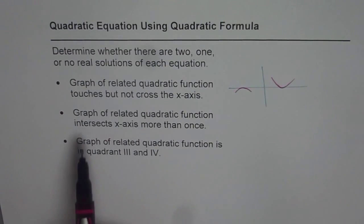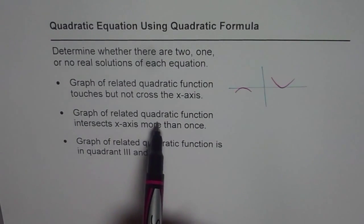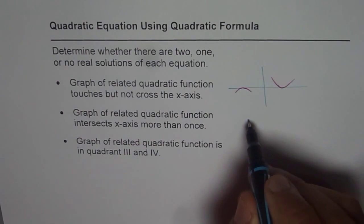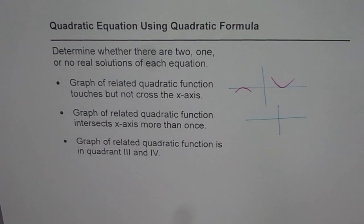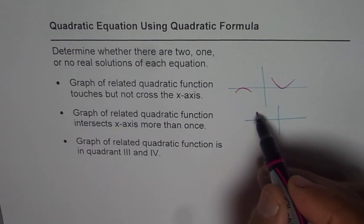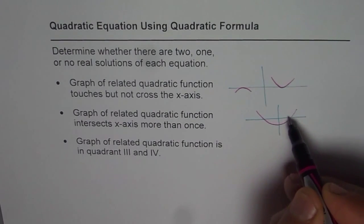The second one is graph of the related quadratic function intersects the x-axis more than once. So think about it, how a quadratic equation could intersect more than once. It cannot intersect three times but it could do it two times. So that is the one.